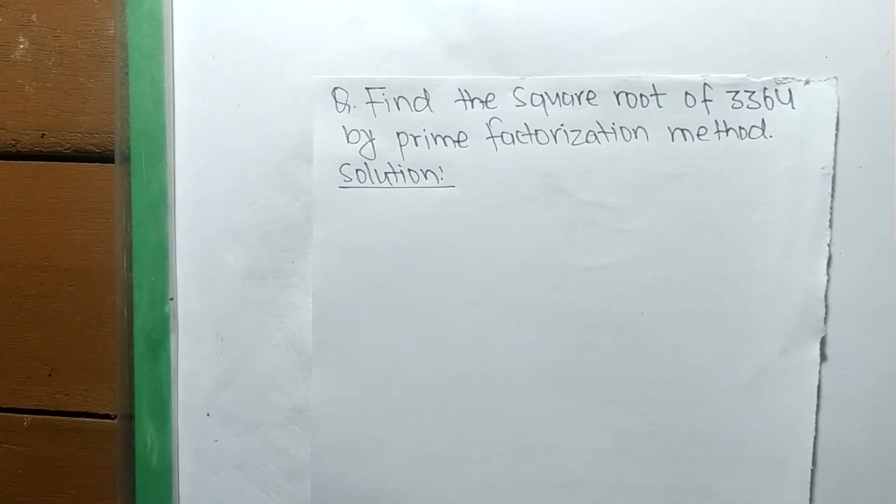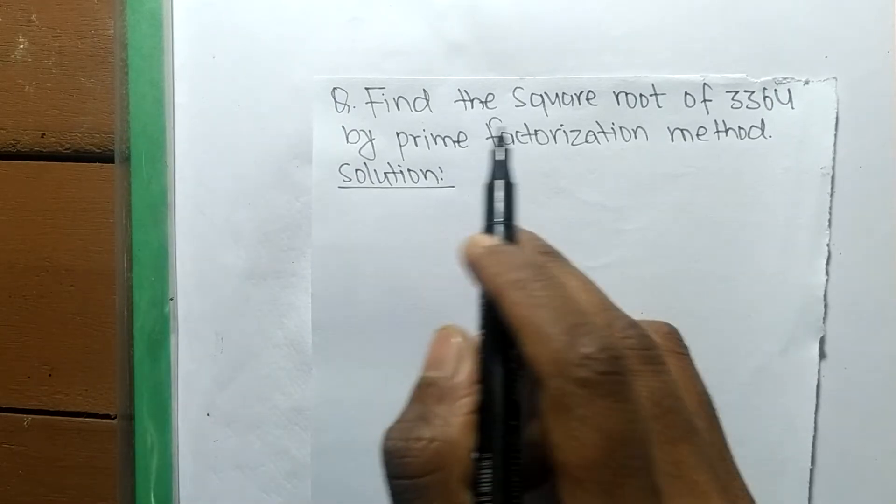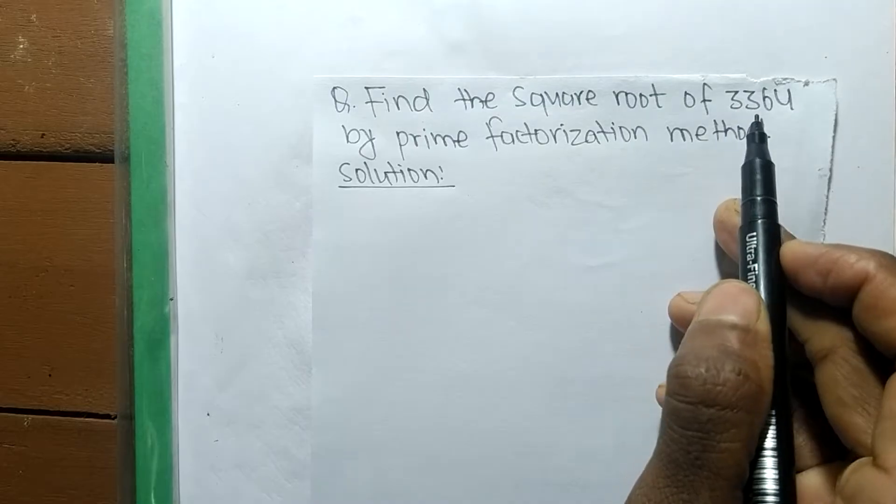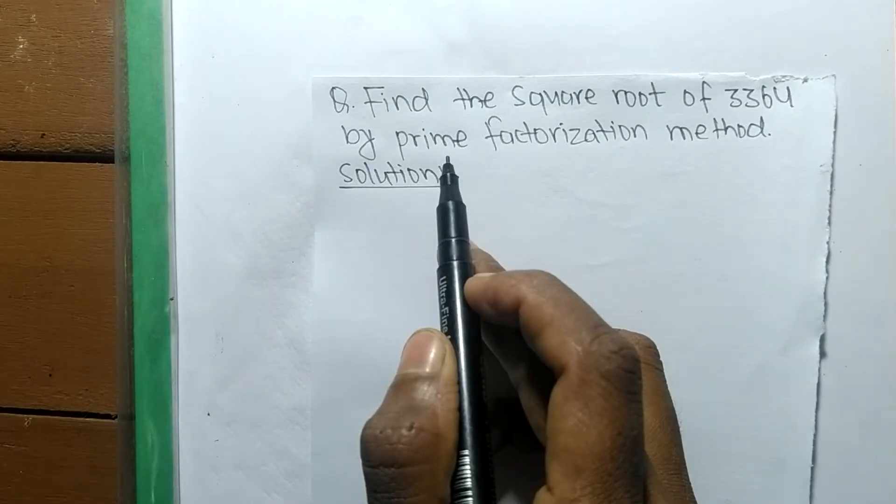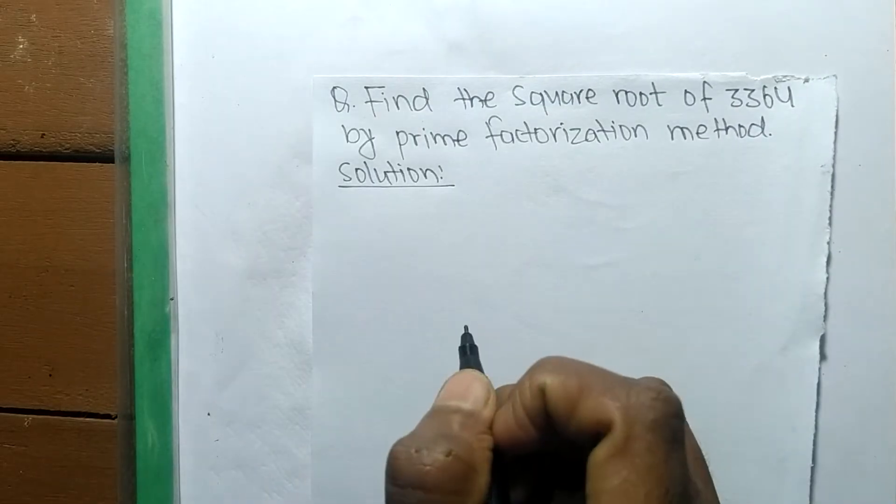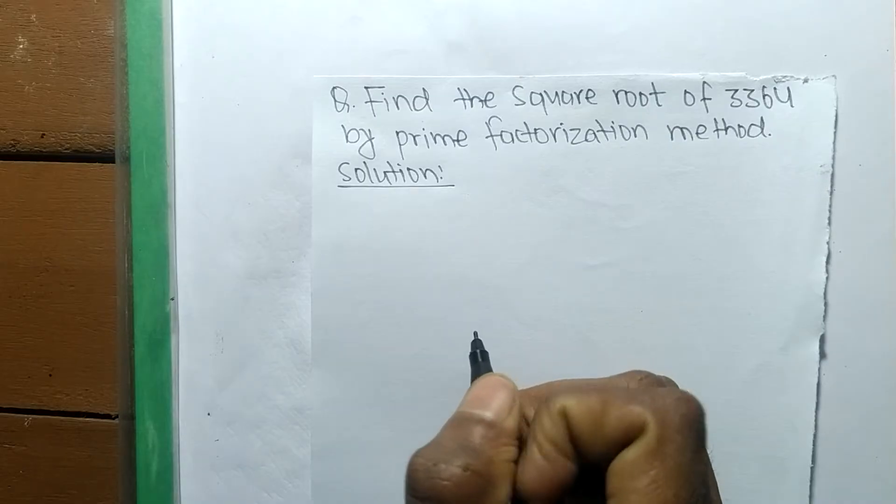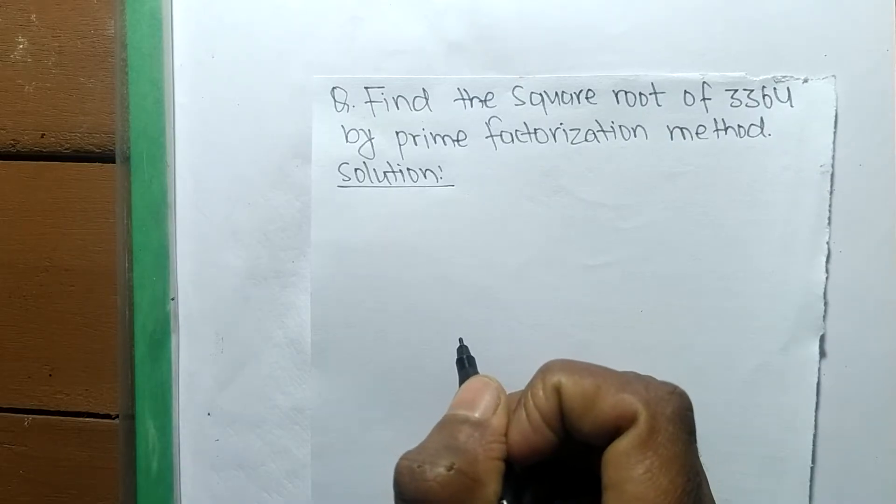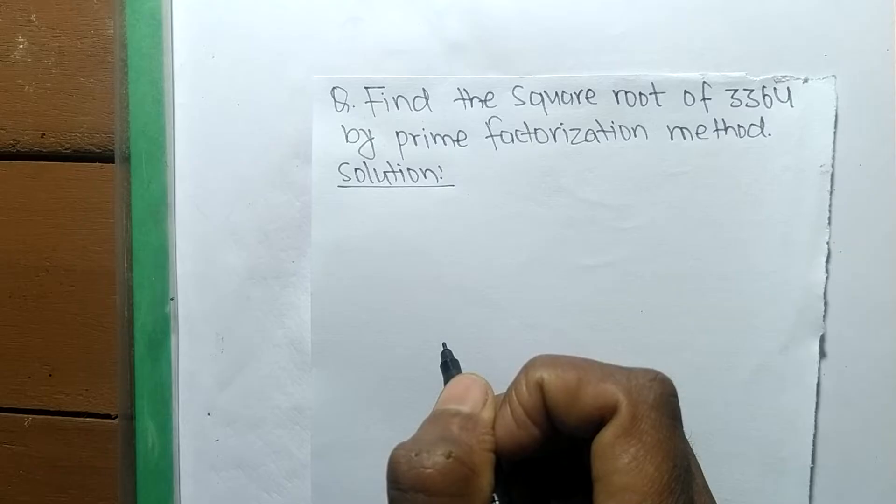So today in this video we shall learn to find the square root of 3364 by prime factorization method. To find the square root by prime factorization method, first we have to find out the prime factors of the given number.